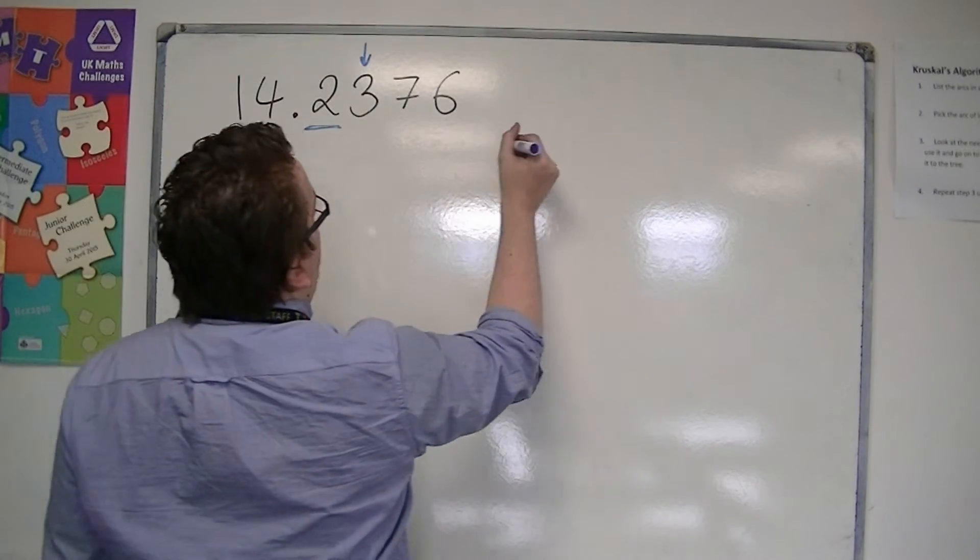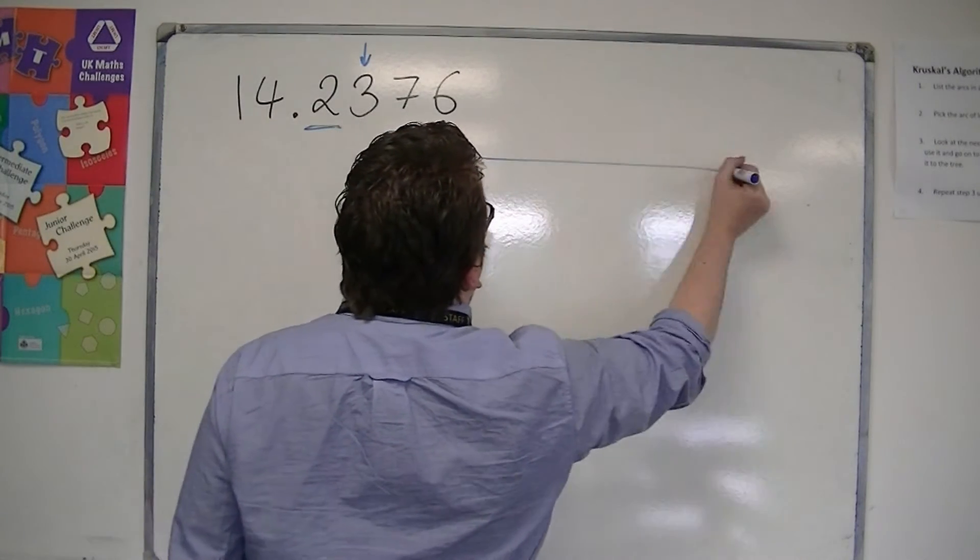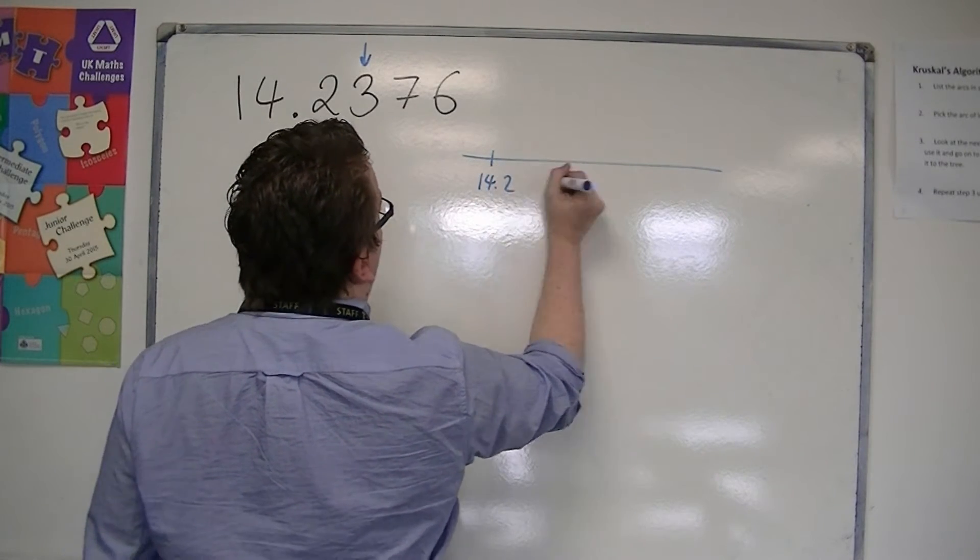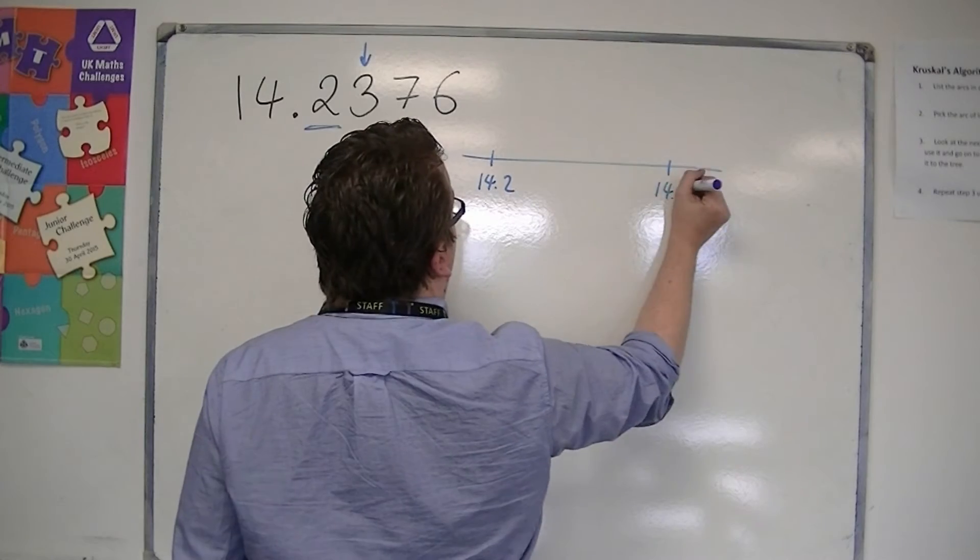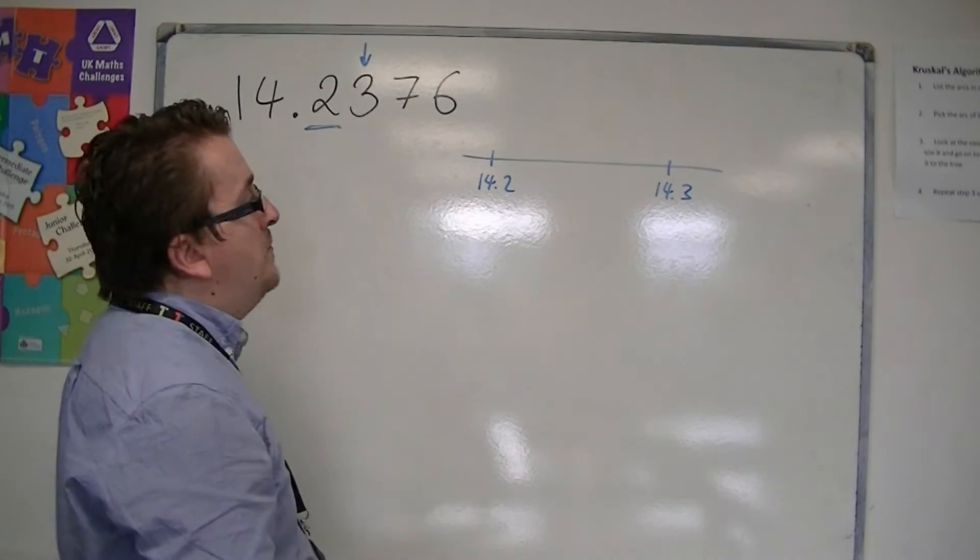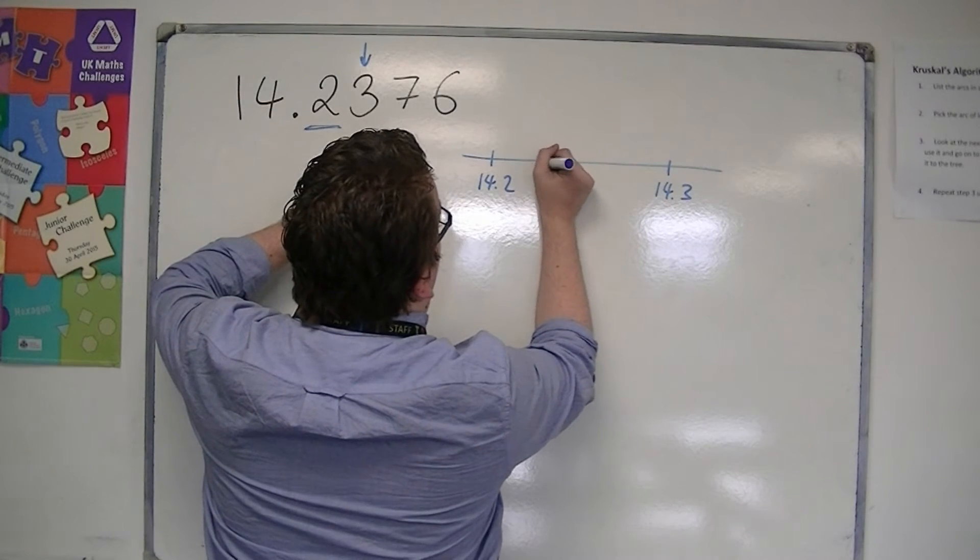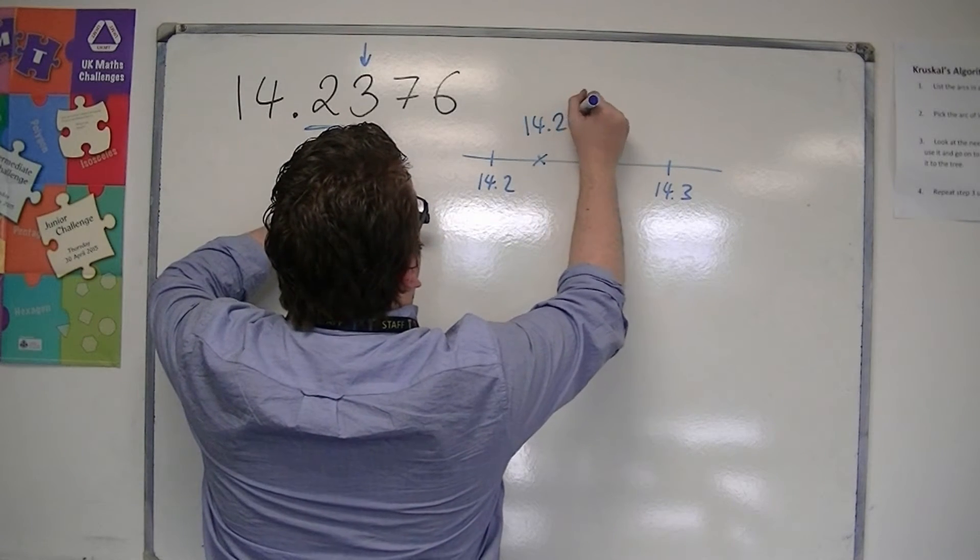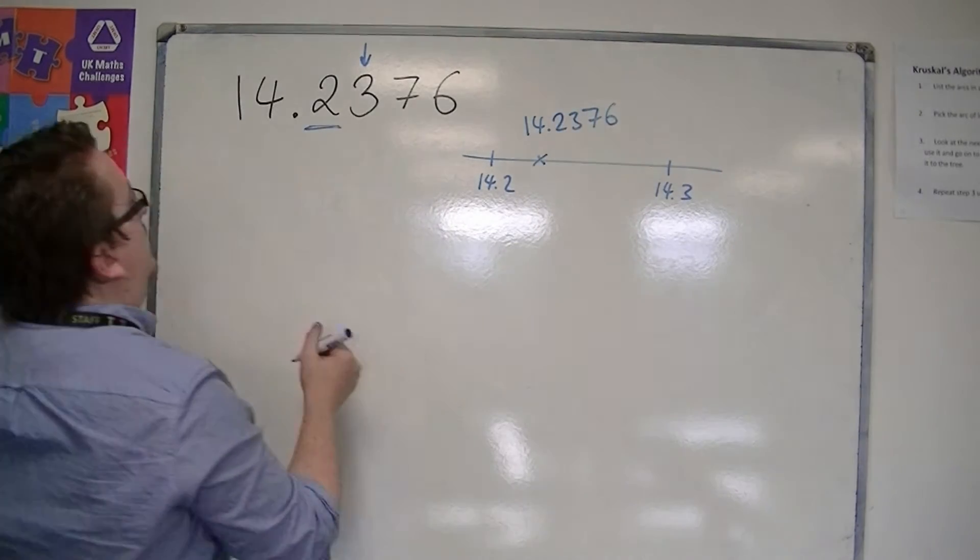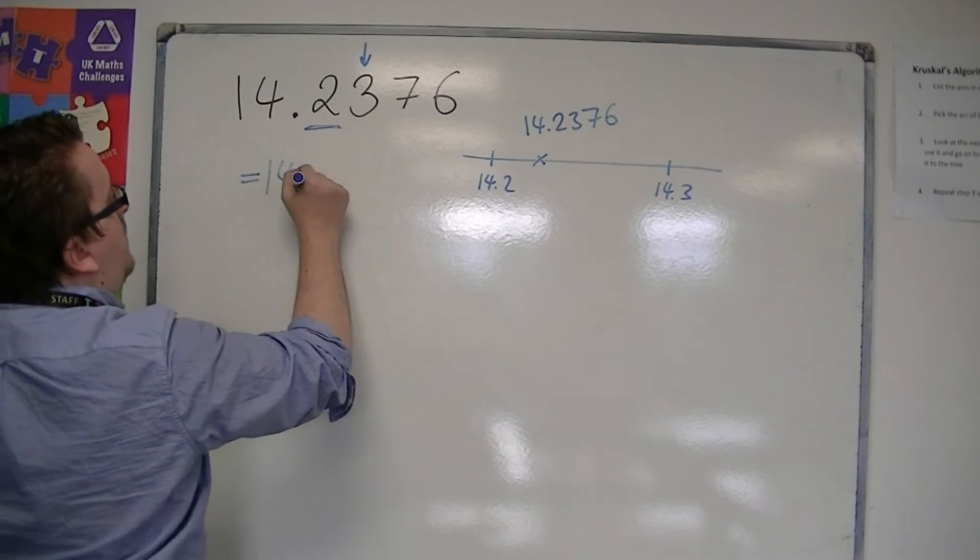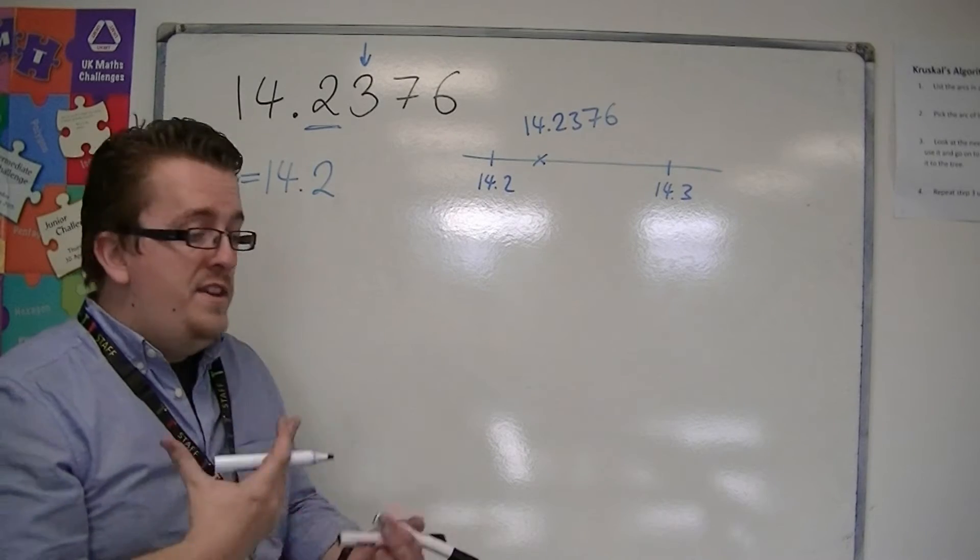So if I split it up into one decimal places, we're looking at 14.1, 14.2, 14.3, 14.4, etc. So 14.2376 is somewhere about there. 14.2376. So the three is telling me to round down. So this would be 14.2 to one decimal place.